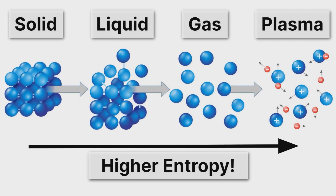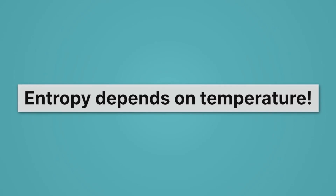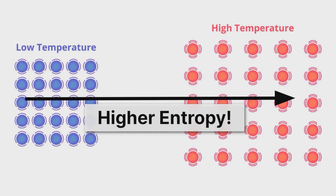Entropy doesn't just depend on phase — it depends on temperature. So for example, as I go from those low temperature atoms, represented in blue, to the high temperature atoms, represented in red, I increase in entropy.